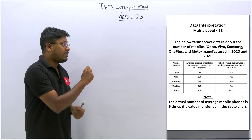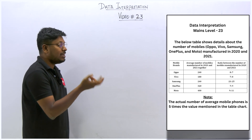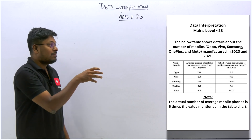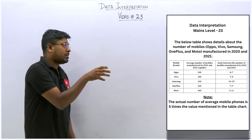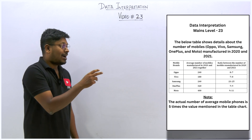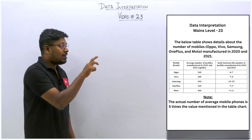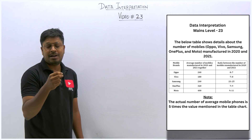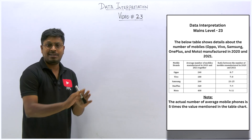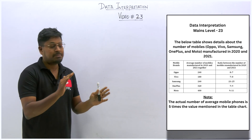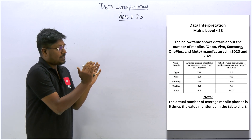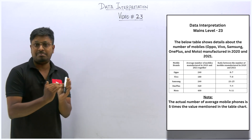The total number of manufactured mobiles has been given for two years: 2020 and 2021. The first column shows different mobile phone brands, then the average number for the two years, and then the ratio between the total number of mobile phones manufactured by two companies. The ratio has been given — it's not that difficult a level.